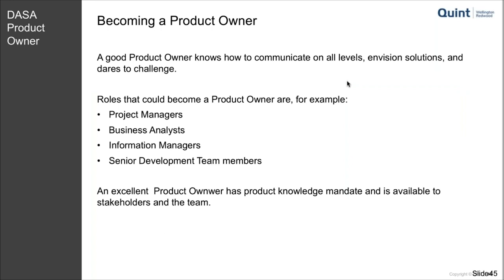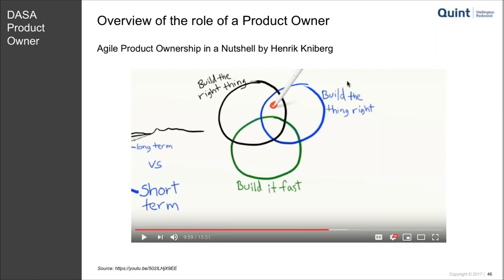How do you actually become a product owner? In the past we've seen project managers, business analysts, senior business analysts, information managers, senior development team members, and people from sales. Anyone with a background in projects and analysis can become a great product owner. Very important is that these people have actual product knowledge, mandate, and availability — this combination is key. You also now see teams forming around product owners — sometimes virtual teams — with project managers helping coordinate and business analysts helping refine stories.